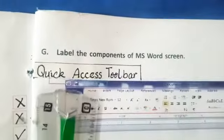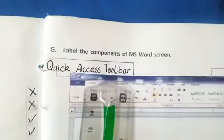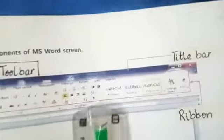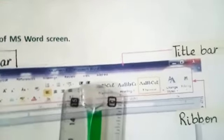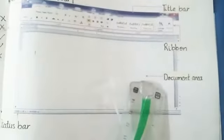First, this is the quick access toolbar on the top, the title bar. These are ribbons, this is document area.